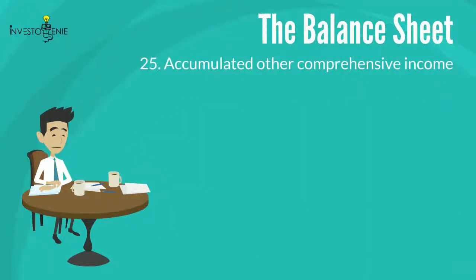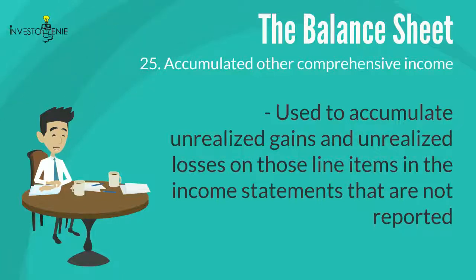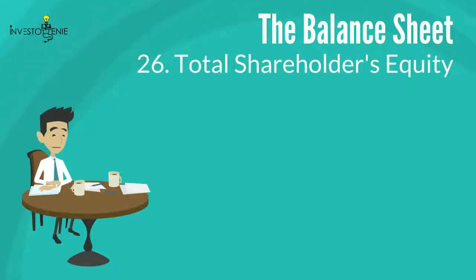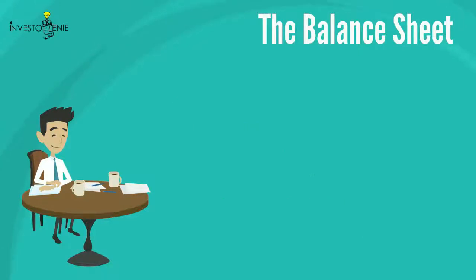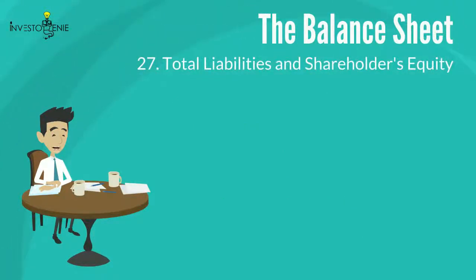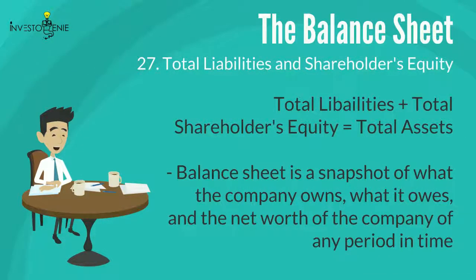Twenty-five: accumulated other comprehensive income (OCI) is included in the equity section of the balance sheet, where it accumulates unrealized gains and unrealized losses on line items in the income statement that are not reported. Twenty-six: total shareholders' equity is the total sum of common stock, additional paid-in capital, retained earnings, and accumulated other comprehensive income — representing the net worth of the company. Twenty-seven: total liabilities and shareholders' equity is the sum of shareholders' equity and total liabilities. According to accounting, this value should equal the total assets of the company. This brings an end to the second financial statement, the balance sheet.